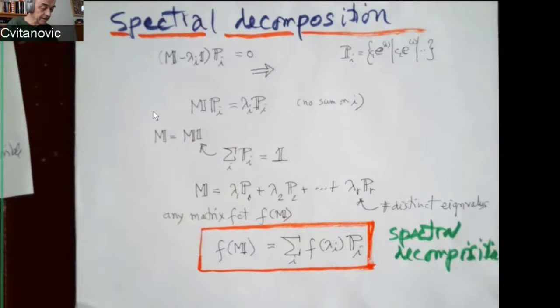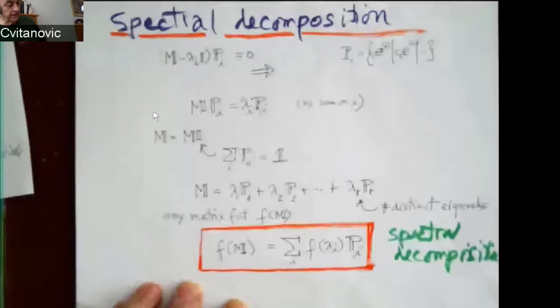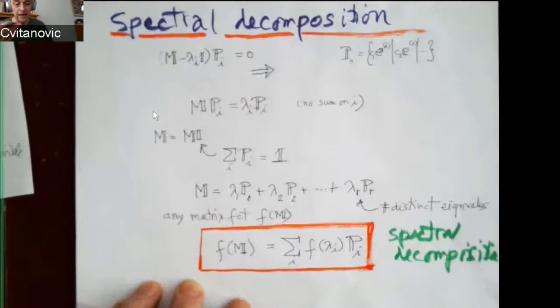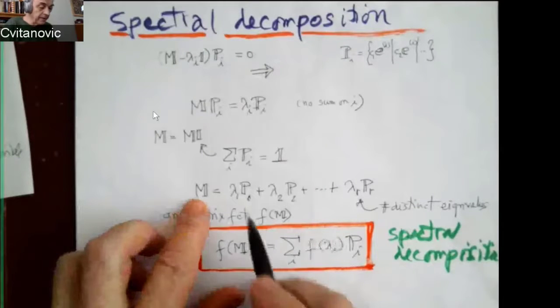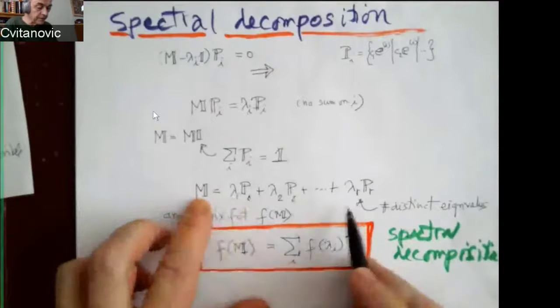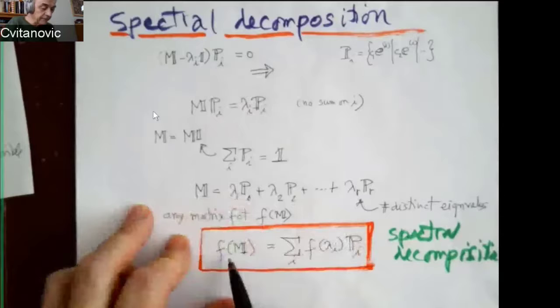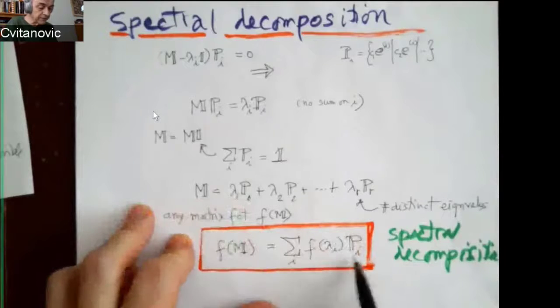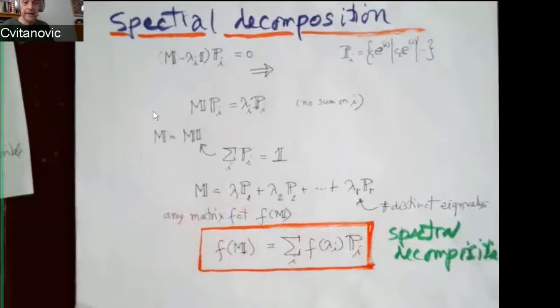Now comes the amazing thing. If I take any function of a matrix, if I'm allowed to write it out as a polynomial, for example exponential I wrote as a Taylor series in powers of M, then M acting on each subspace returns lambda. M squared returns lambda one squared. So if I had a Taylor series in matrix form, then on subspace it's just a function of the single variable. So that's a spectral decomposition. And that's an amazingly powerful thing in calculations.